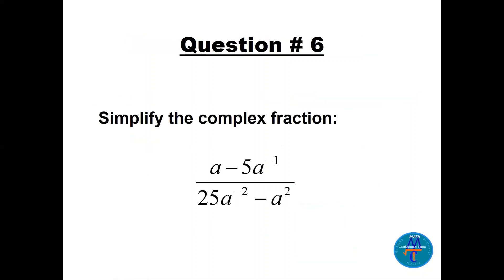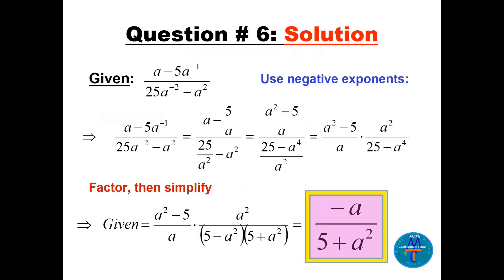Question 6: A complex fraction with negative powers. Remember: 5a^(−1) means 1/a, but the 5 has no negative power — only the a does. Similarly for a^(−2): be careful, the power minus 2 is only on a, not on 25. Converting negative powers: the numerator becomes (a − 5)/a and the denominator becomes (25 − a⁴)/a².